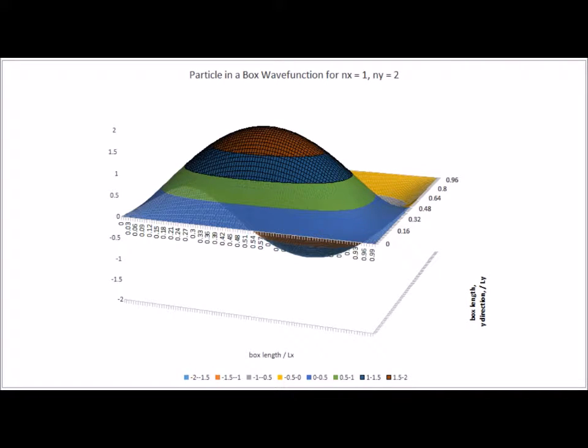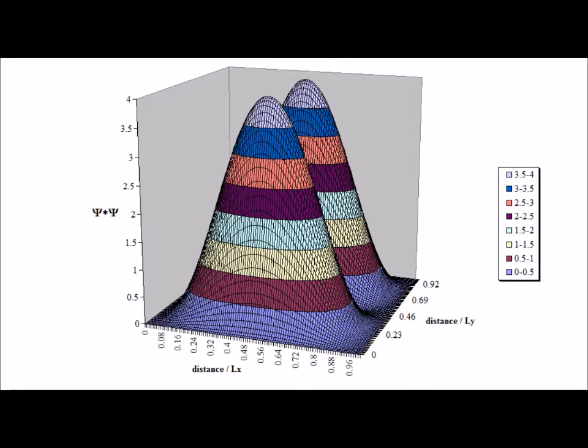Here is the wave function solution for nx equals 1 and n sub y equals 2. Note that while there are no nodes in the x direction, there is exactly one node in the y direction, just as in the one-dimensional case, the number of nodes is equal to the quantum number n minus 1 for that particular variable. Here is the probability density for the case n sub x equals 1 and n sub y equals 2. Note again, we can see the probability density is exactly equal to zero at the node for l sub y over 2.